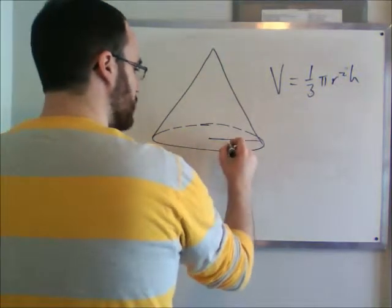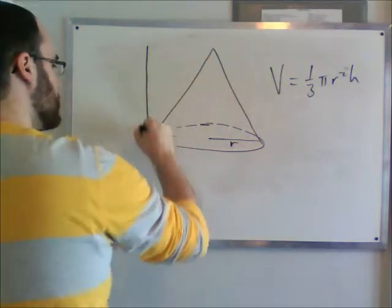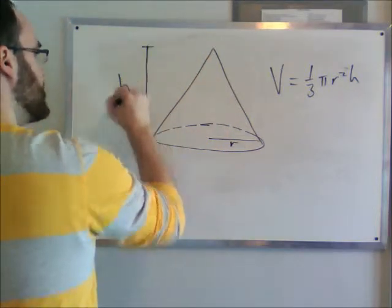We've got r, which is our radius of the circle on the bottom, and h is the height of the actual cone.